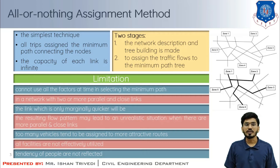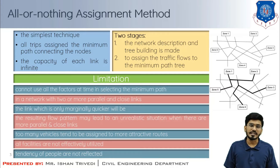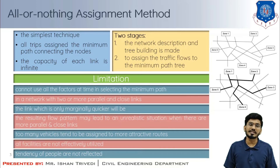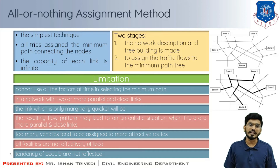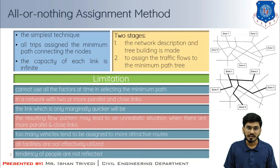Too many vehicles tend to be assigned to more attractive routes, which may cause increased congestion on these routes, and this technique takes no account of this factor. All facilities in the network are not effectively utilized. If a superior facility such as a motorway is available, people tend to prefer it only for longer journeys, and this technique does not reflect that tendency. These are the limitations of the all-or-nothing assignment method.